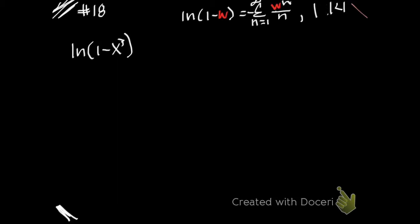Let me change those to w's. Then on the series that we're trying to manufacture, we're looking at the natural log of 1 minus x to the third. Turns out my w is x to the third, so I'm going to replace all my w's with x to the third. That's what you see me doing here.